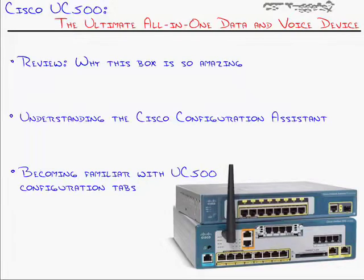You've made it. It's the final nugget of the CCNA Voice series — the last real nugget, because I think I'm going to add a test prep after this one. I saved the best product for last: the Cisco UC500, or what Cisco calls their Cisco Smart Business Communication System — the ultimate all-in-one data and voice device. We'll walk through why this box is so amazing, then the Cisco Configuration Assistant, and become familiar with the UC500 configuration tabs.